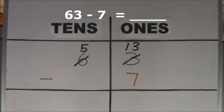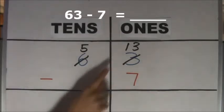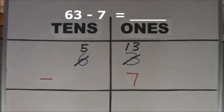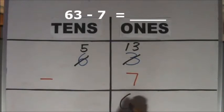Now we have enough ones to take away 7 ones. 13 ones minus 7 ones equal 6 ones. We have 6 ones left.